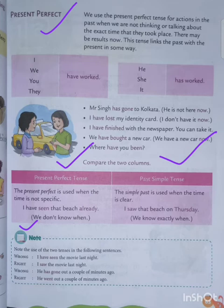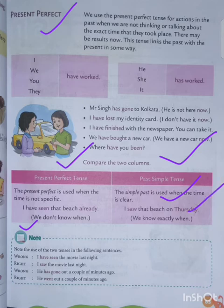Past simple tense is used when the time is clear. In past simple tense, the exact time of the action is known. For example: 'I saw that beach on Thursday' — meaning on Thursday we went to the beach or we saw the beach on Thursday. Here, Thursday is clear and specific — so this is past simple tense.